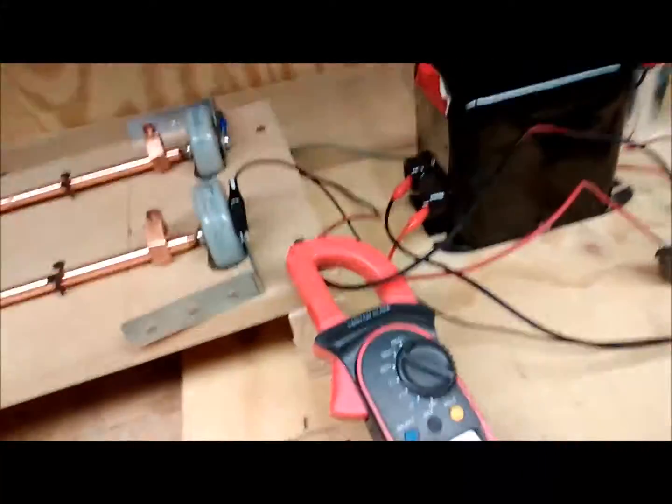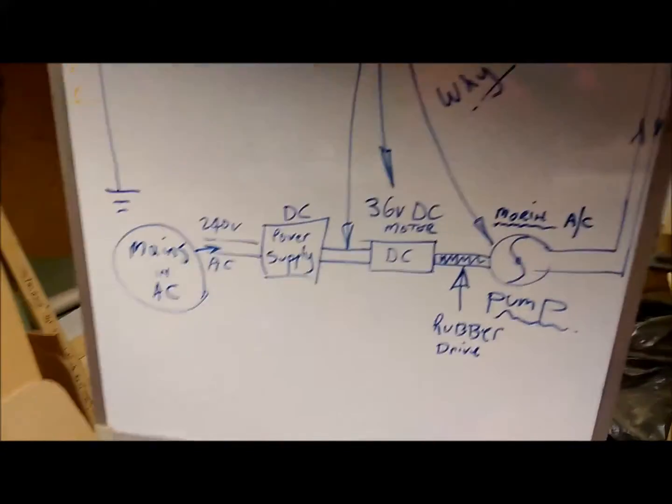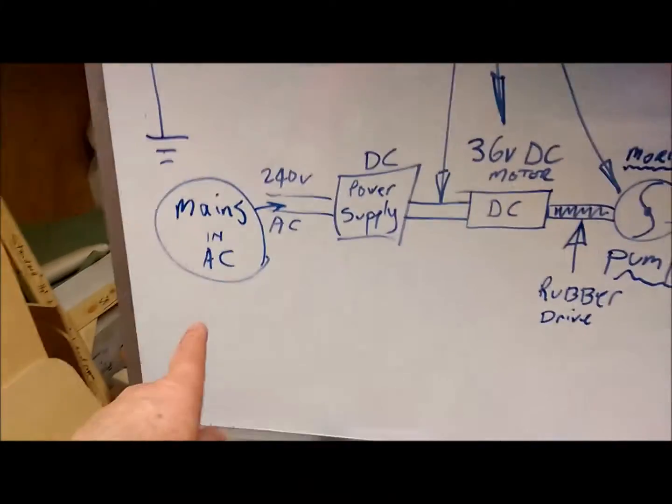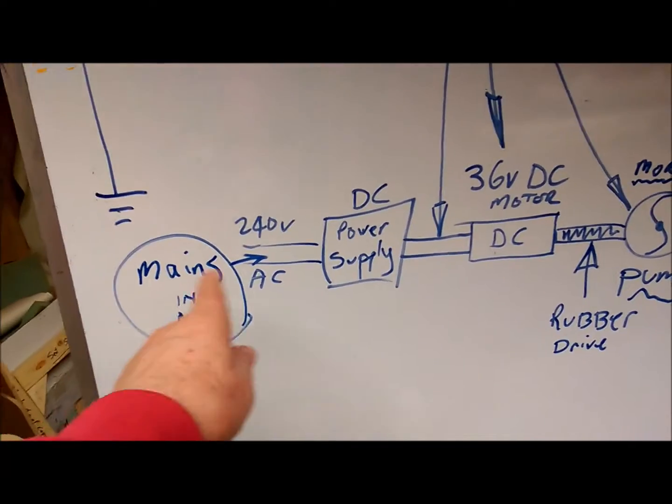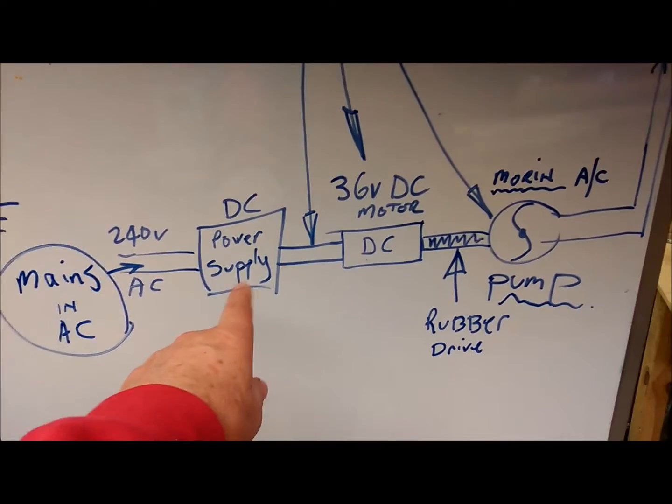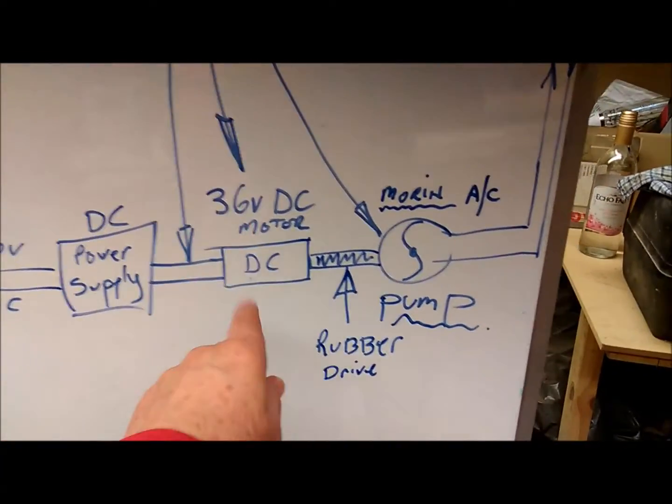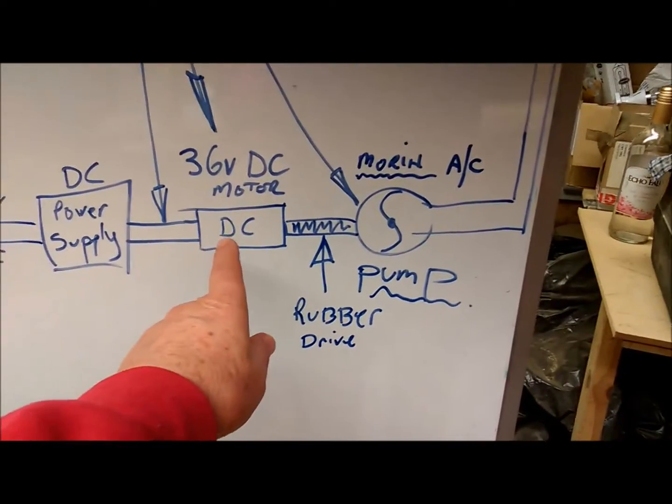The schematics of it here, I'm sorry about the light but I hope you can see this alright. We've got to start from the mains coming in, well the main supply coming in, then we've got that DC power unit which powers DC voltage to a DC motor which is a 36 volt motor.